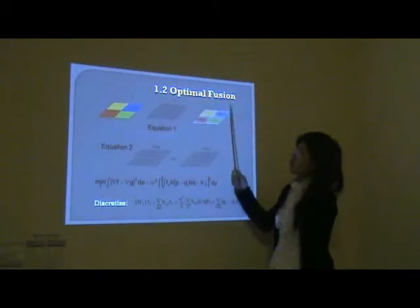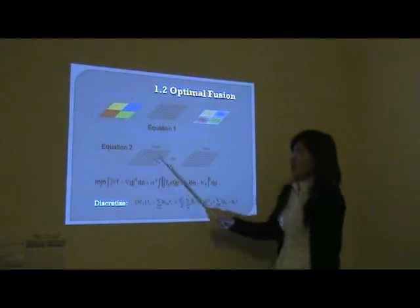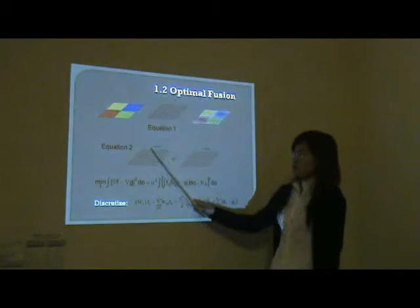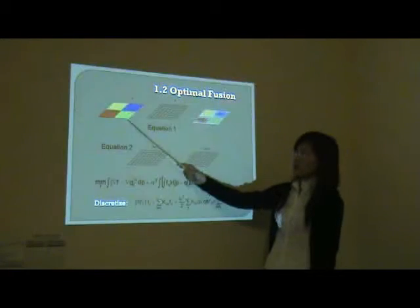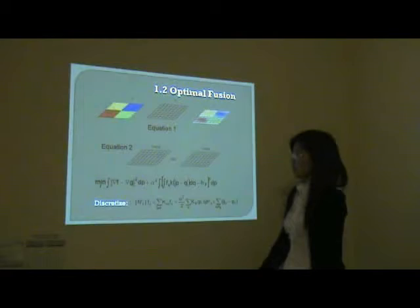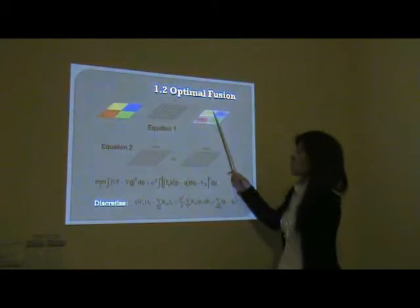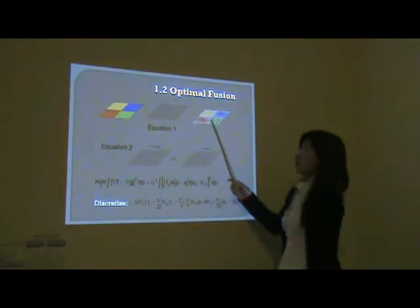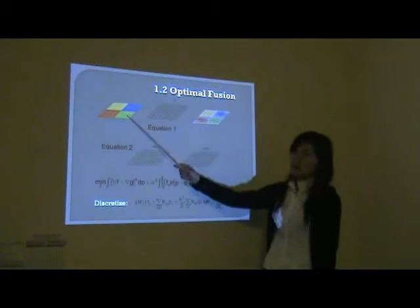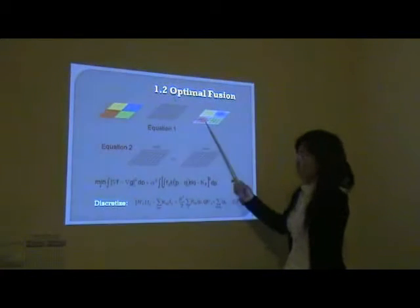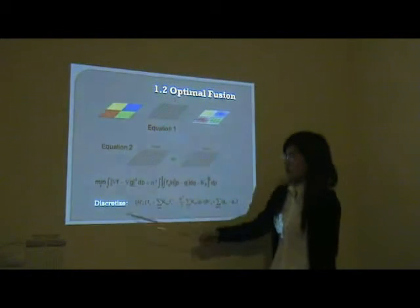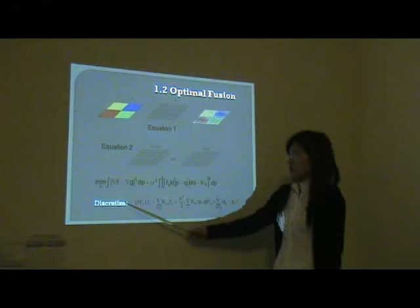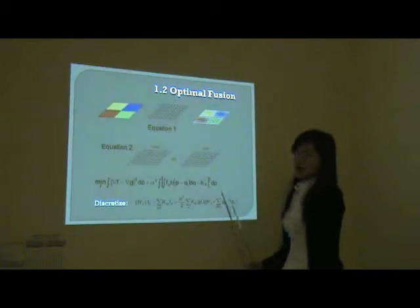Second, Poisson Fusion. It also has the panchromatic-related guidance field, but this time the multispectral image is induced as a soft constraint. That is, it requires the objective image to have a similar color with the multispectral image after downgrading its resolution, just like the second term in the minimization. This is the gradient constraint. Then we can solve it with a linear equation using sparse solvers.